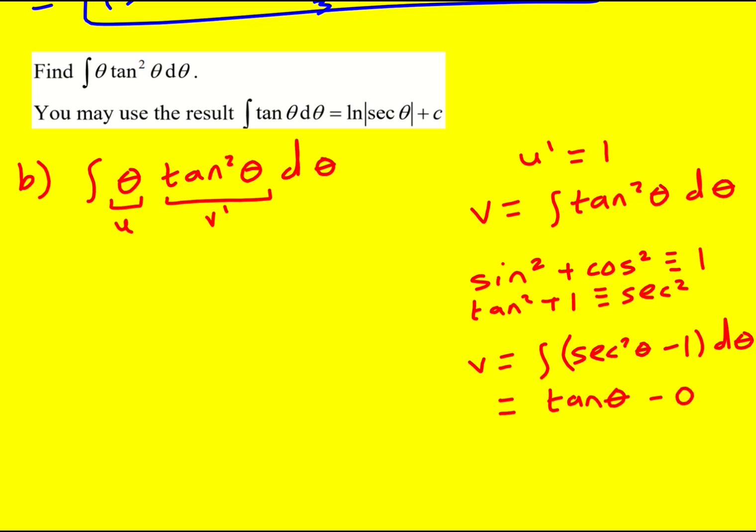So minus theta, and then we've got a plus c of course we ignore that. So then our integral is going to be uv minus the, again this is also given in the formula book, integration by parts. Now we can start putting it in. So u is theta and v is tan theta minus theta. And then I'm doing the integral of 1 times tan theta minus theta.